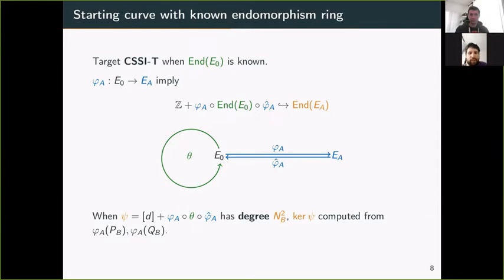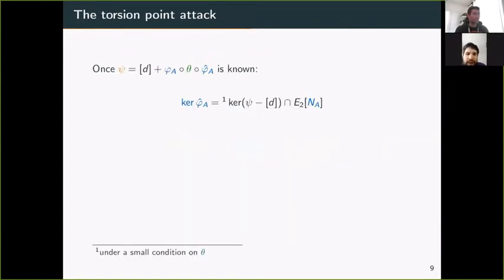The key idea is that if you take the endomorphism θ in E₀ in a good fashion, this specific endomorphism ψ of EA will be computable. Namely, find an integer d and θ in E₀ such that the degree of this endomorphism ψ is Nb². Because then there's a not too hard way of actually computing ψ, knowing φA(PB), φA(QB). Even though you don't know φA and φ̂A, you know how it acts on the Nb-torsion, giving enough information to recompute ψ if ψ has degree Nb².